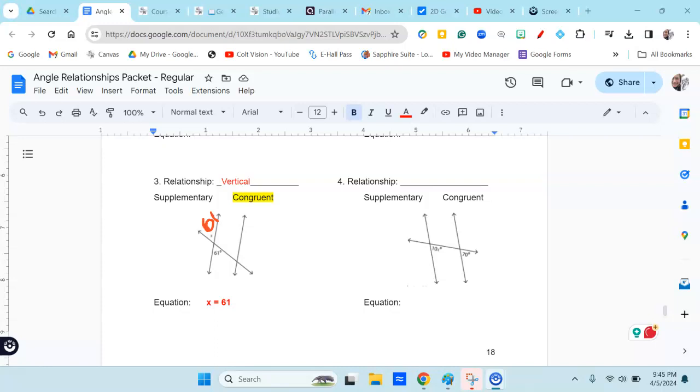Then when I go to do example number four, I look at this, and since they're on different lines but they're in the same position, that makes them corresponding. So this is a corresponding relationship. I'm going to write corr.